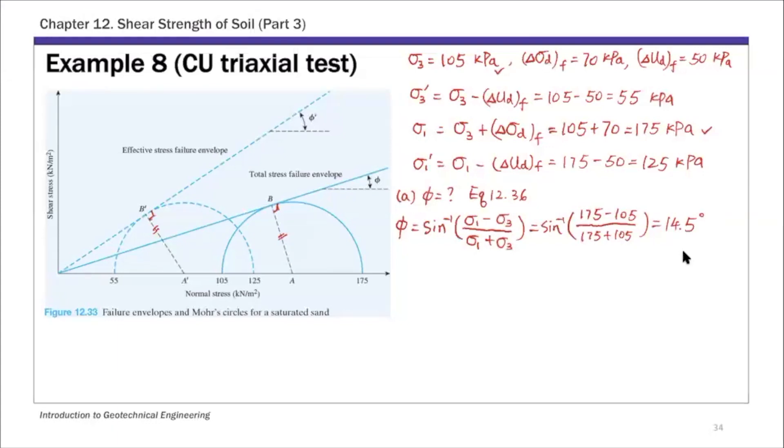That's the total stress friction angle or undrained friction angle. For part b, phi prime, we're going to use equation 12.37. For phi prime, it's sine inverse using the effective stress version. We have calculated these two values, so substitute them: 125 minus 55 over 125 plus 55. This angle is 22.9 degrees.